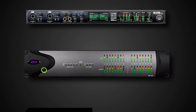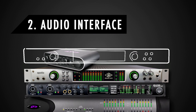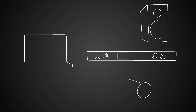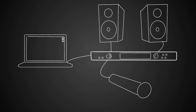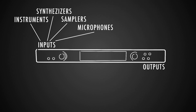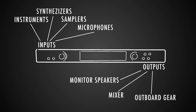First off, we'll need a computer, then we'll need an audio interface. Our interface converts the signals from analog to digital and from digital to analog, so it's called an AD/DA converter. Our interface is like the bridge between our speakers and our microphones and the computer. We've got multiple inputs and multiple outputs. We connect all the outputs of our instruments, samplers, synthesizers, and microphones to the input of our interface to record them. The outputs of the interface are then connected to speakers, mixers, and some outboard gear.